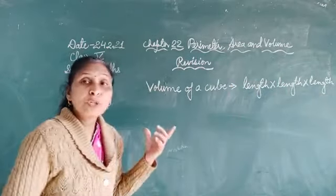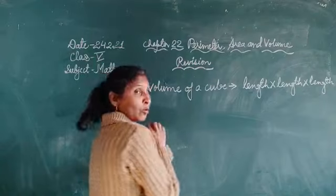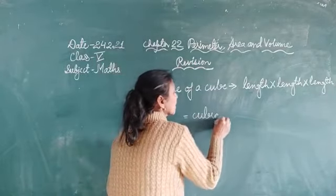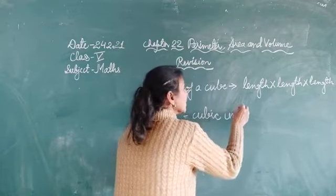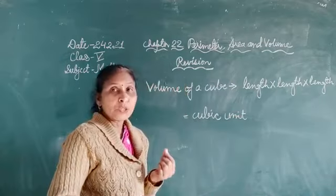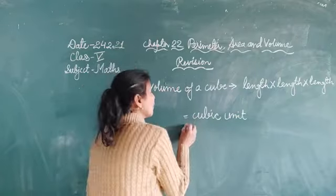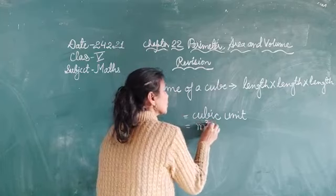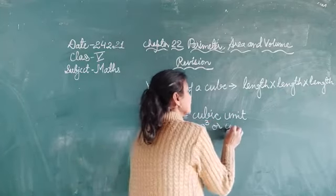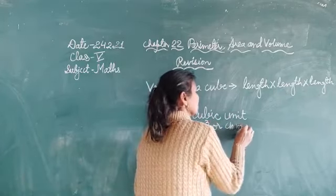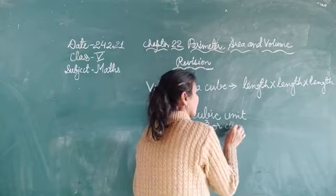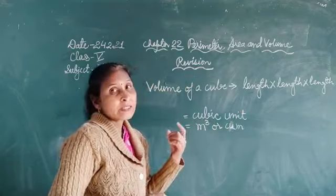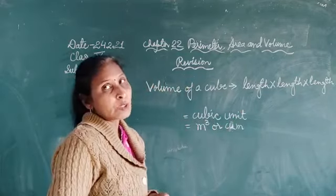The unit of volume of a cube is cubic units. If the length is in meters, then the volume of a cube will be in meter cube, or you can say cubic meter.